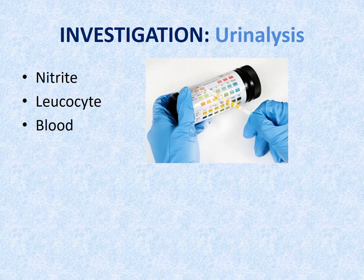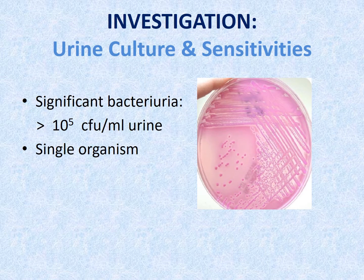The initial investigation is urinalysis or urine dipstick. The presence of nitrite, leukocyte, and blood suggests the diagnosis of urinary tract infection. The diagnosis is confirmed by urine culture which grows more than 100,000 colony-forming units of a single organism per ml of urine. Antibiotic sensitivity testing on the grown organism helps guide the choice of appropriate antibiotic for definitive treatment.